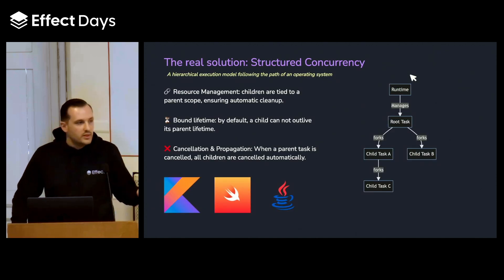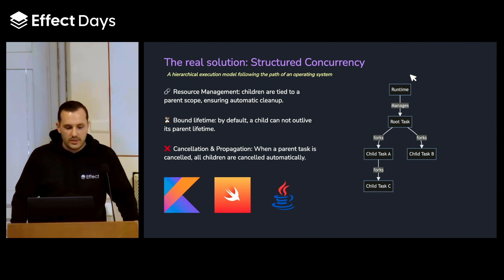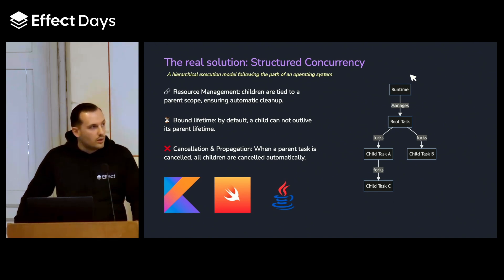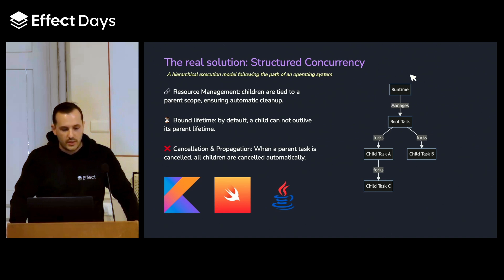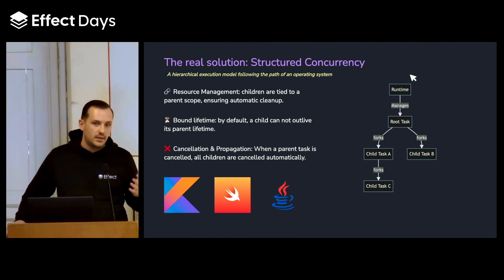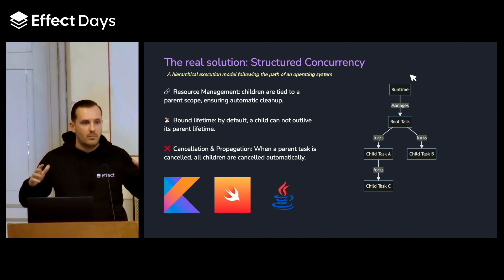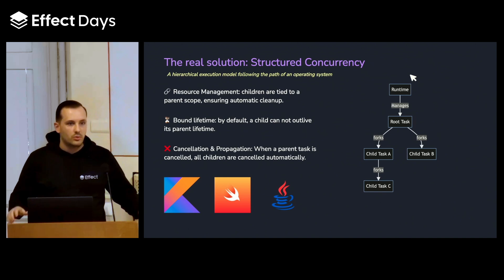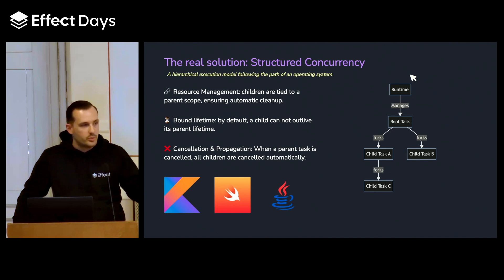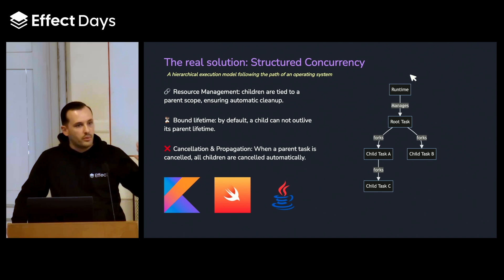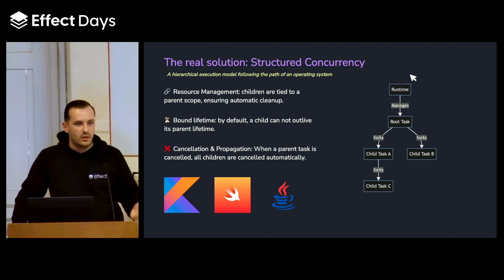Now that we saw some of the problems with concurrency, we can talk about a solution called Structured Concurrency. What's good about Structured Concurrency is that it helps us model a graph of operations where all parents fully manage all children's operations — managing the lifetime and all the scopes linked to those children. All operations have well-defined rules and well-defined lifetimes that you can rely upon.